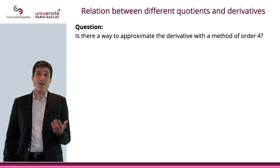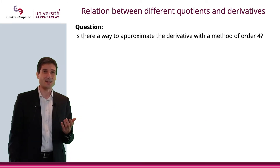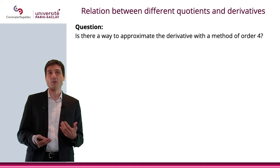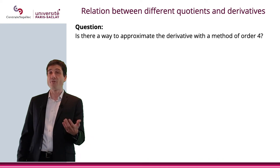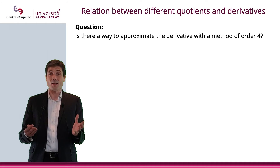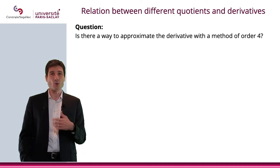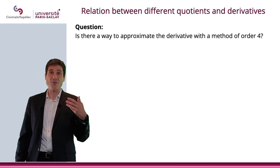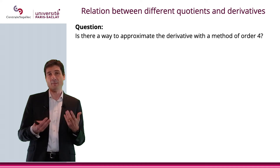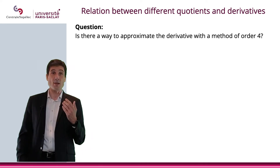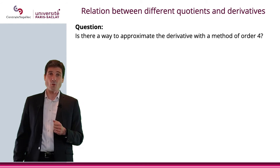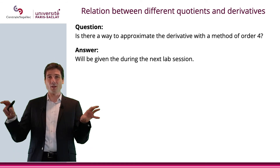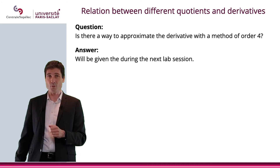There is a question you're probably asking yourself: we have order 2, but would there be a way to approximate the derivative with a method of order 4 or more? If it's so nice, why don't we just go higher? Can we do order 4? In other words, if I divide my step by 10, I would love to divide the error by 10,000. The answer will be given during the next lab session — and yes, the answer is yes. We'll see that we need to go a little further out, and we will be able to do that.